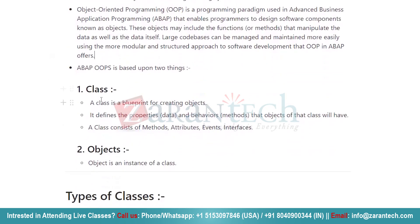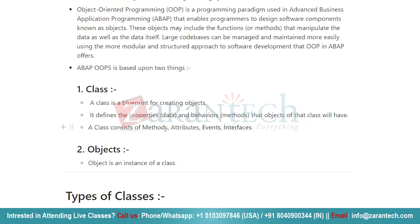ABAP OOP is based on only two things: class and object. A class is nothing but a blueprint for creating objects. As I explained, if you want to create a house, there must be some design — that blueprint is nothing but a class, and that actual house will be your object, which is basically an instance of the class. In that particular design, you define properties and behavior — in SAP terminology, you will call them data and methods — that objects of that class will have.